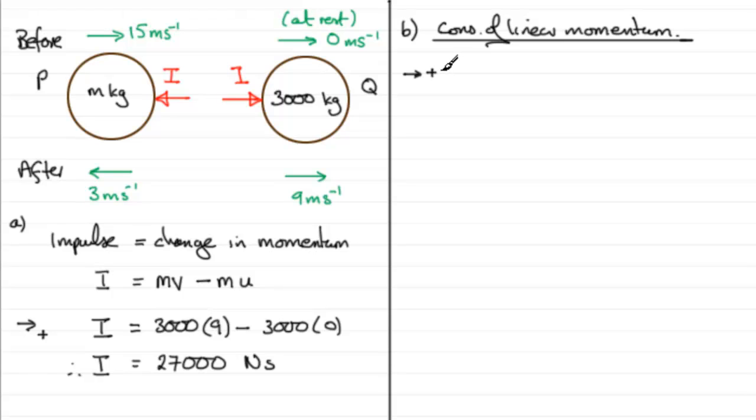So we've got the total momentum before impact. If we start with P, we've got the mass m multiplied by its velocity—its speed is 15 meters per second, acting towards the right, so that's going to be plus 15. Then we add to this the momentum of Q before impact, so it's the mass 3000 multiplied by its velocity. Well, it's got a speed of zero, so it doesn't matter what direction we go there.